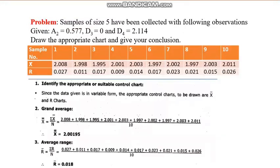Now let us solve a problem. Samples of size five have been collected with the following observations. Also given are A2, D3, and D4 values — these are normally available in standard tables, but in an exam they give them directly in the question. The question asks: draw the appropriate chart and give your conclusion.